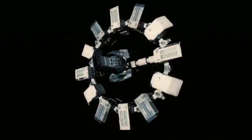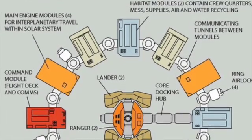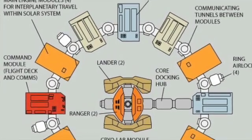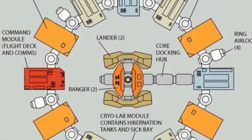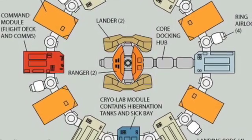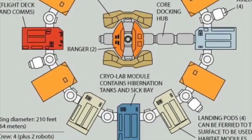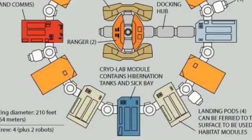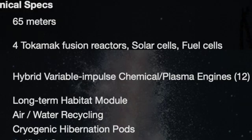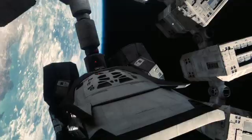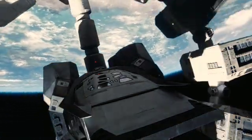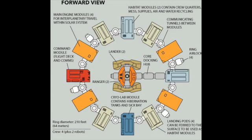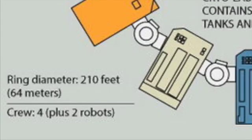Now the mystery of the missing fuel tanks isn't limited to the Rangers. According to the Interstellar wiki, the 12 modules making up the outer ring of the spacecraft consist of three habitat modules, one hibernation module, four landing pods, and four engine modules. The propulsion system is described as a hybrid variable impulse chemical/plasma engine powered by a tokamak fusion reactor. And despite the fact that chemical and plasma engines as well as fusion reactors all require fuel to operate, there are still no fuel tanks to be found. Seriously, where are they?